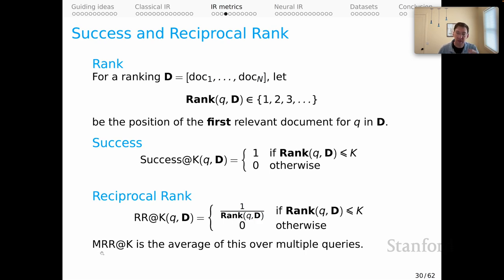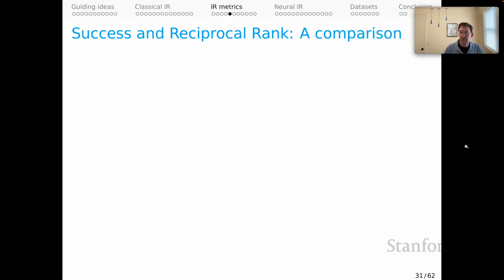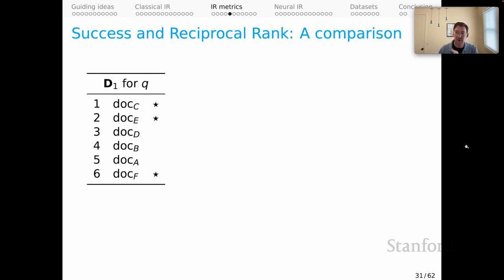And then MRR at k is a common metric that you see in the literature, and that's simply the average over multiple queries for the RR at k values. Let's get a deeper feel for these metrics by looking at some examples, and I'm going to use these rankings as running examples.